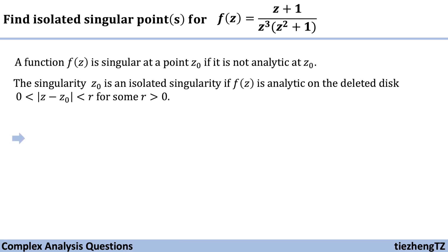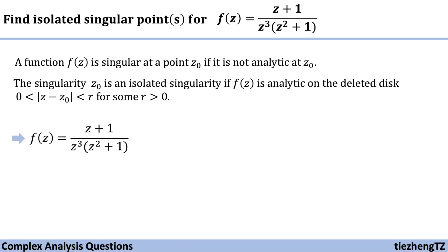So let's go back to this given function, (z+1) over z cubed times (z squared plus 1). In this function, we have a numerator and denominator, and we know when the denominator is 0, this function cannot be analytic.